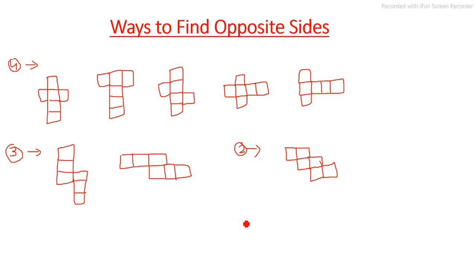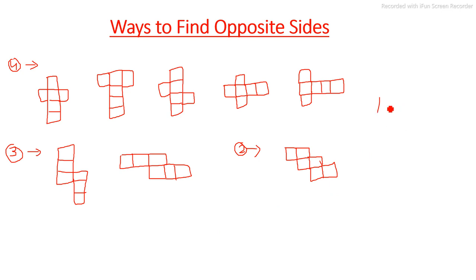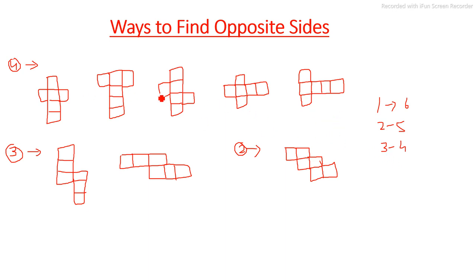To understand which face comes opposite, we will take the example of an ordinary dice. In a standard dice, one is opposite to six, two is opposite to five, and three is opposite to four. These are the opposite faces in an actual dice. We will use this to understand how these opposite faces appear in the opening of cubes.